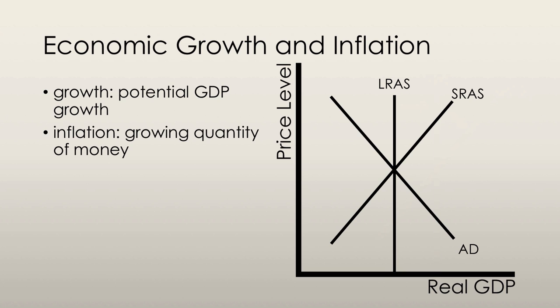Inflation, however, results from a growing quantity of money that outpaces the growth of potential GDP, so aggregate demand is increasing at a faster rate than long-run aggregate supply. If aggregate demand were to increase at the same pace as long-run aggregate supply, then real GDP would grow without inflation.